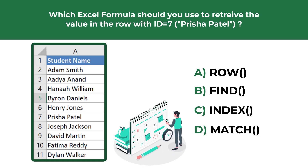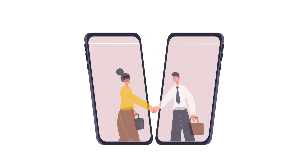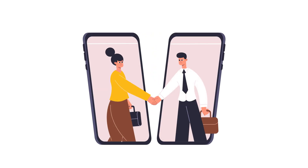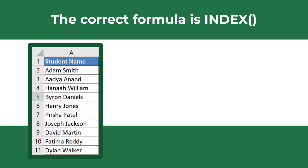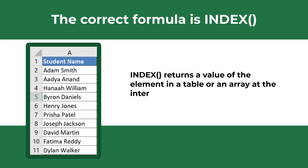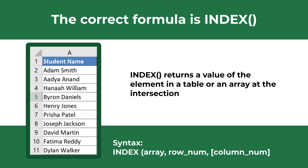Give yourself 10 to 20 seconds — maybe pause the video to come up with the right solution. The correct formula is INDEX. INDEX returns a value of an element in a table or array selected by the row and column number indexes. When entering the INDEX formula, you need to enter the array and provide the row number; the column number is optional.